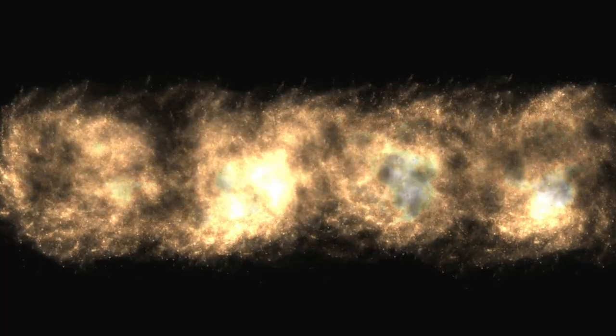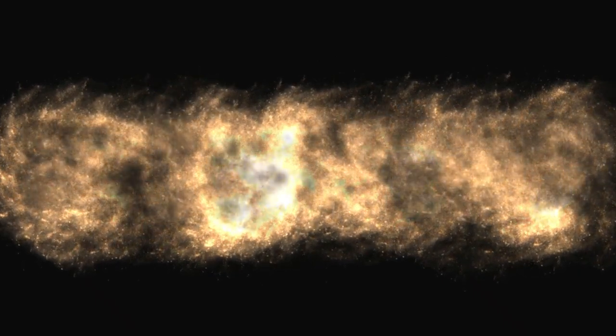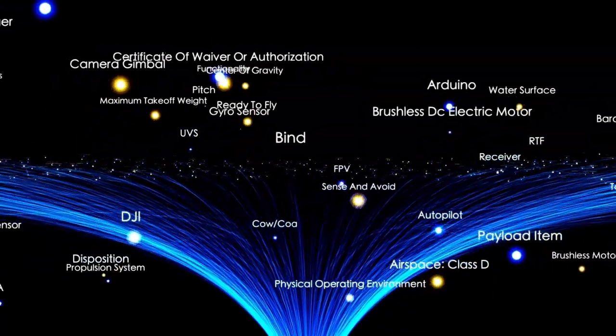Scientists estimate that the diameter of the observable universe is about 93 billion light years. That may seem surprising when compared to the estimated age of the universe, which is around 13.8 billion years.